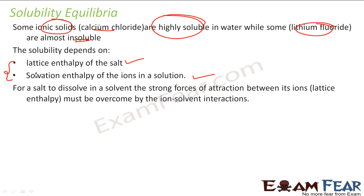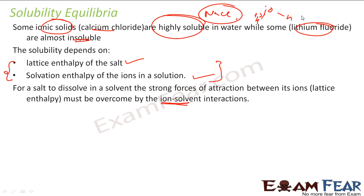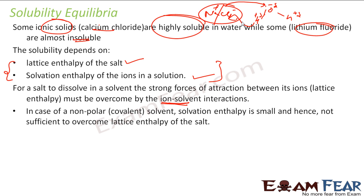For example, NaCl dissolves easily in water while acid fluoride doesn't dissolve. For NaCl or calcium chloride to dissolve, the strong force of attraction between Na⁺ and Cl⁻ — the lattice enthalpy — has to be overcome by ion-solvent interaction. Water has partial negative charge on oxygen, so the interaction between H and Cl⁻, and Na⁺ and O, must overcome the lattice enthalpy.